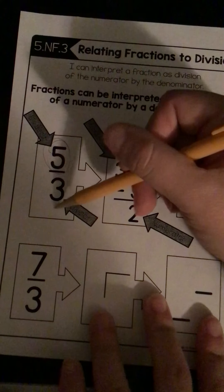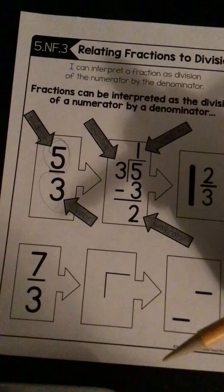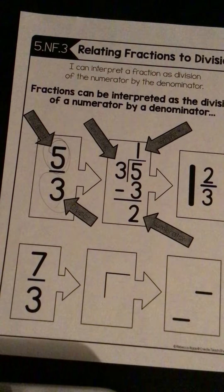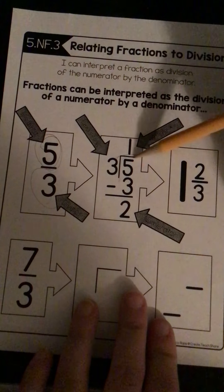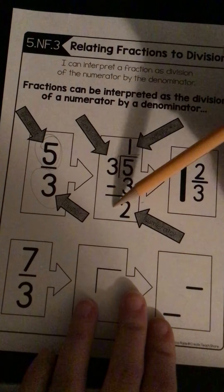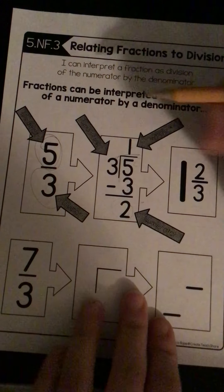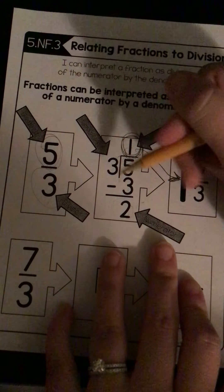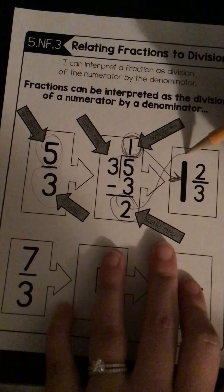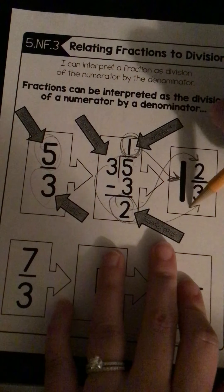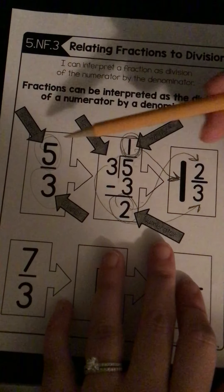Anytime the numerator is bigger than the denominator, you need to change it into a mixed number, and the way you do that is simply to divide — similarly to how we did the cookie problem. The numerator goes inside the house, the denominator goes outside. Three will go into five one time; one times three is three; subtract — there's nothing to bring down, so this is my remainder. The quotient is your whole number, the remainder is your numerator, and the divisor is your denominator.